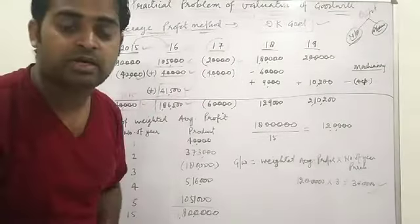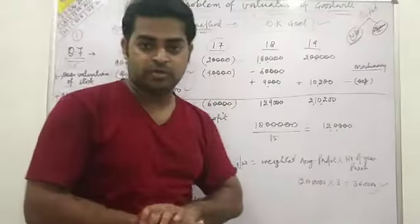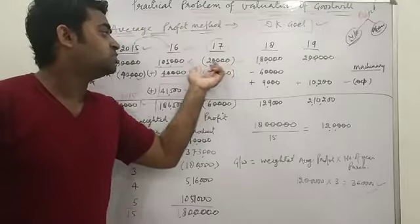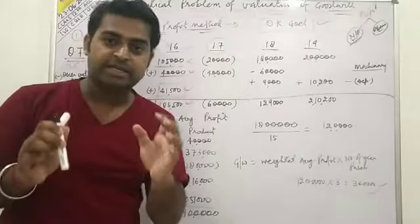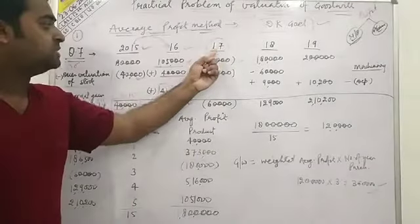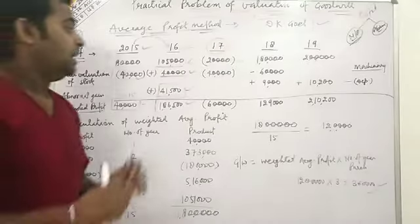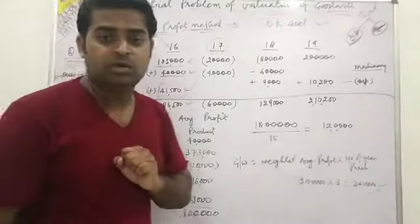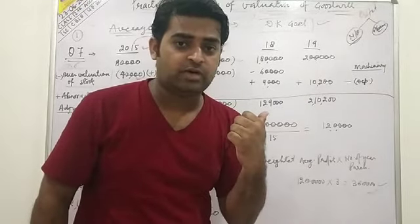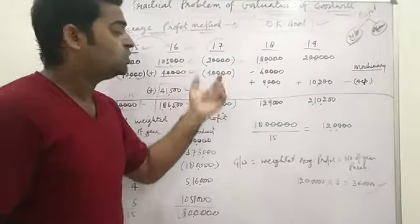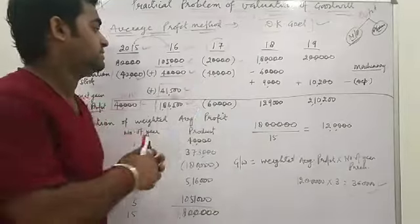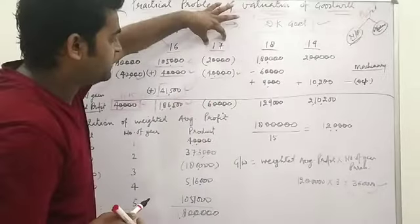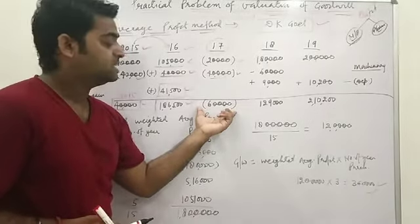Next, 2017. We are calculating adjusted profit for this year. There is a loss of Rs.20,000 given in the question — I have written it in brackets so you can understand it is a loss. The question says an abnormal gain is included in this amount. As I explained earlier, abnormal gain will be deducted. So we subtract Rs.40,000 for the abnormal gain, and the adjusted figure for 2017 is a loss of Rs.60,000.